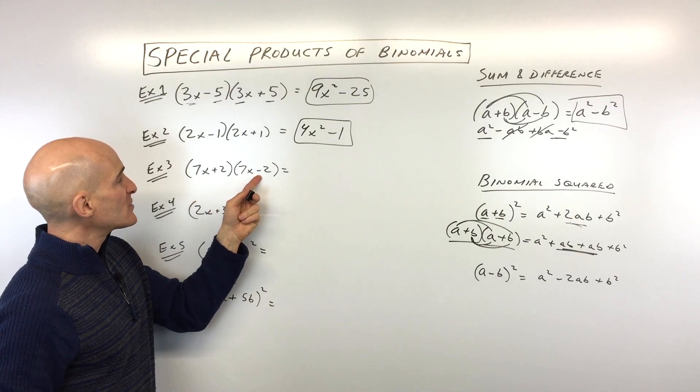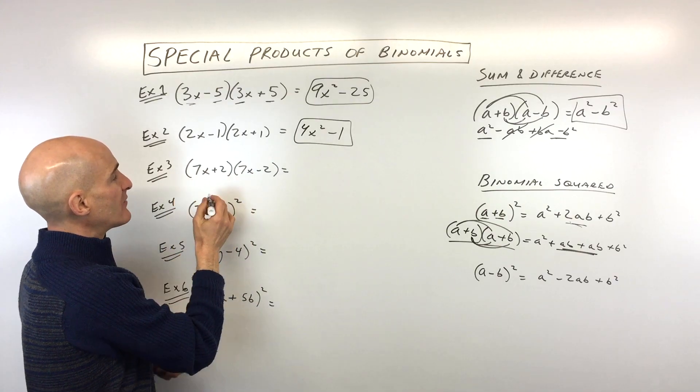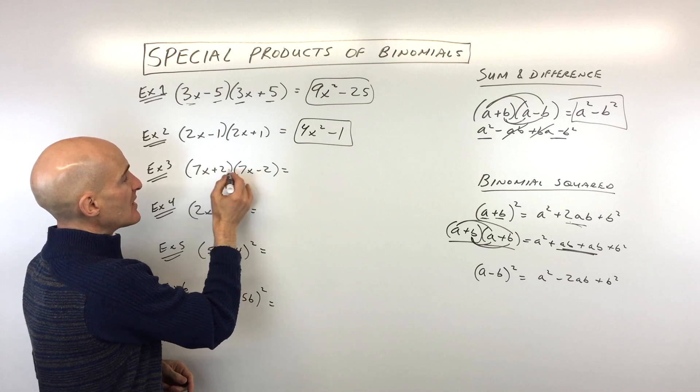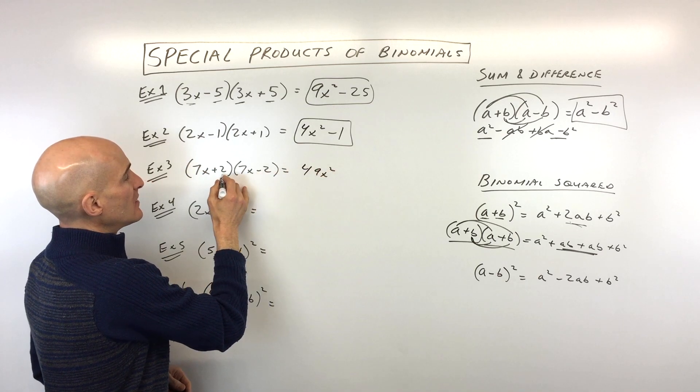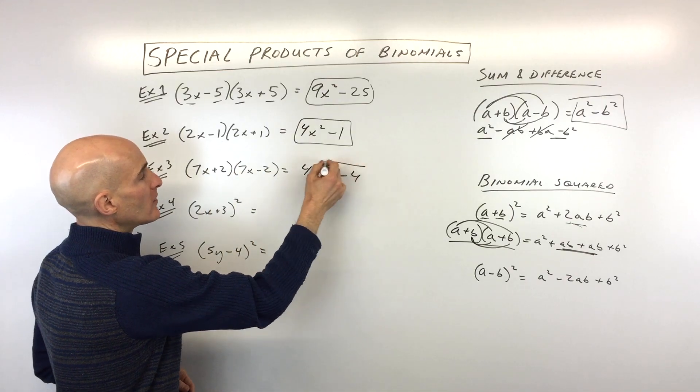Number three, same thing, a sum and difference pattern. a and b are the same, 7x and 2. So we've got 7x times 7x is 49x squared. 2 times negative 2 is negative 4, and you're done.